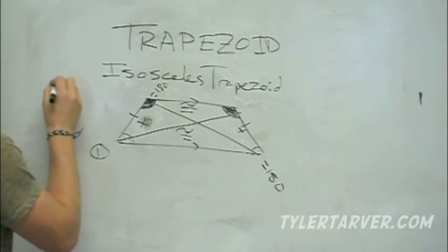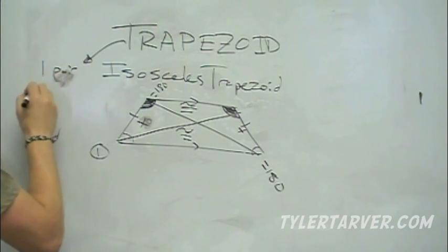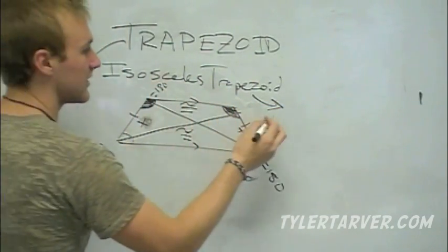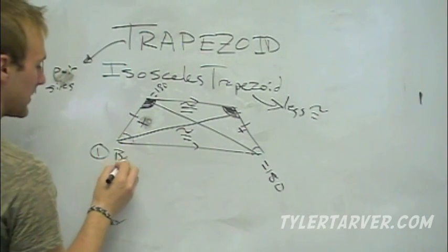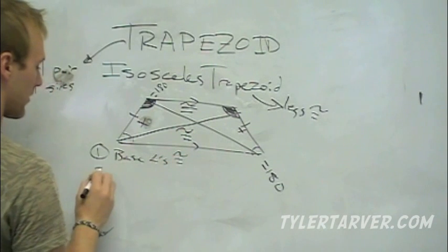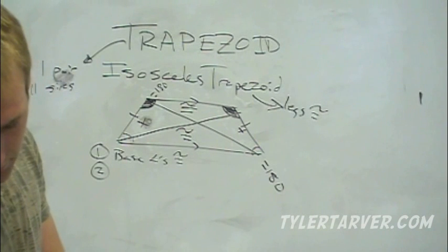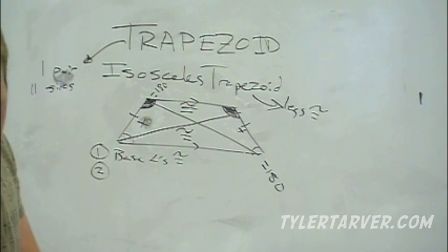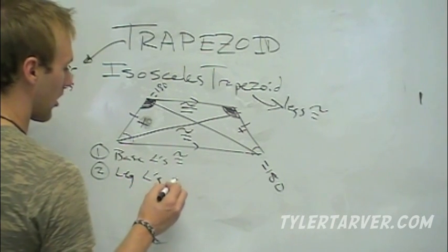So to summarize: a trapezoid has one pair of parallel sides. An isosceles trapezoid adds that the legs are congruent. For an isosceles trapezoid: base angles are congruent, and the leg angles — the ones adjacent on each leg — are supplementary.